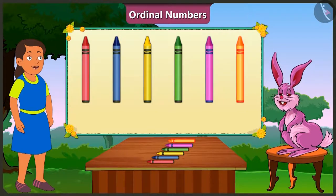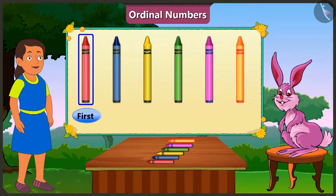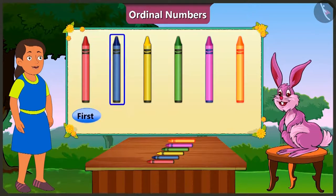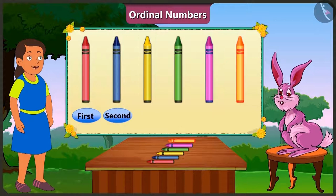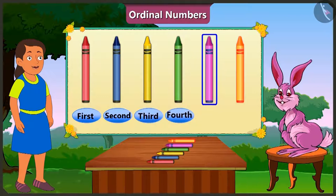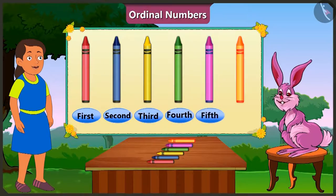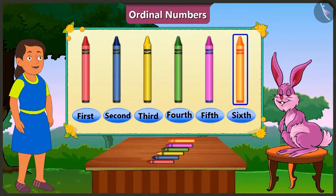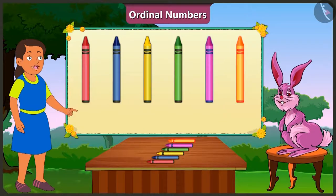And at the sixth place is the orange crayon. This is why, in order to depict the order of crayons, we give the first position to the red crayon, second to the blue crayon, third to the yellow crayon, fourth to the green crayon, fifth to the pink crayon, and sixth position to the orange crayon.